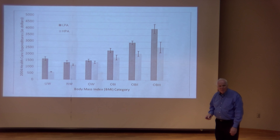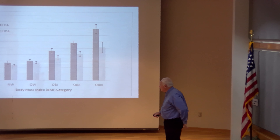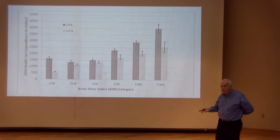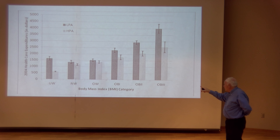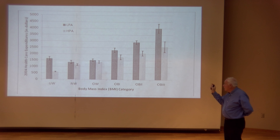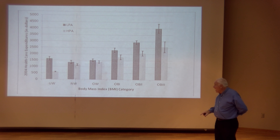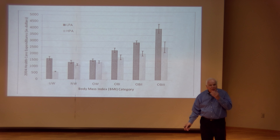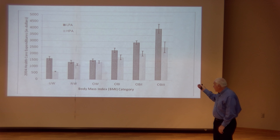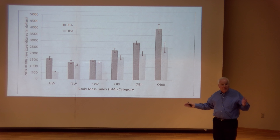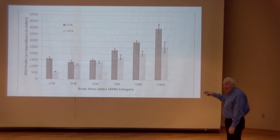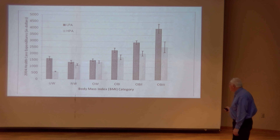This next graph is hopefully more interesting. It shows healthcare expenditures across different BMI classifications, comparing low physical activity (two or fewer days per week) versus high physical activity. In every BMI category across the entire range, healthcare expenditures are lower in the physically active group. Your natural inclination is to say physical activity is reducing healthcare expenditures — but in a couple of minutes I'll complicate that picture somewhat.